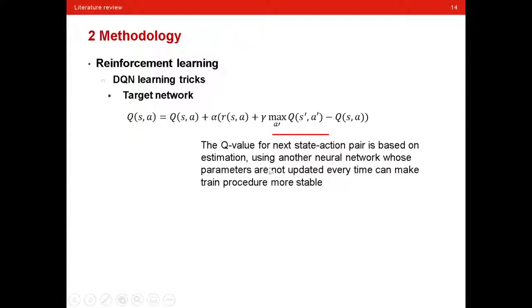Thus, using another neural network whose parameters are not updated every time can make training procedure more stable. That's why the target network is introduced.